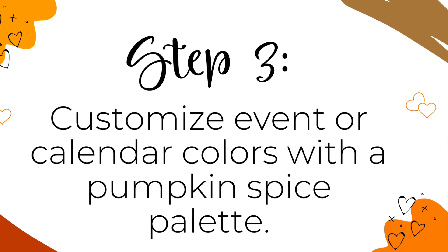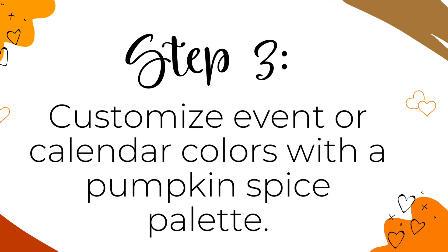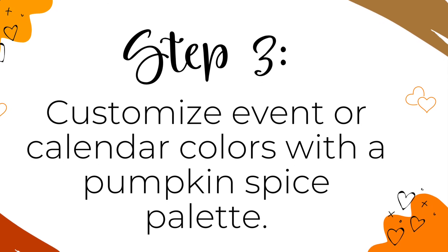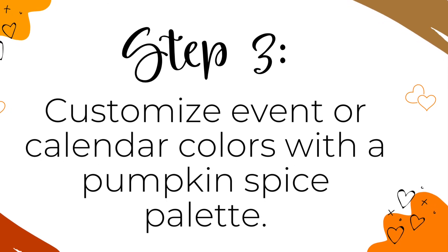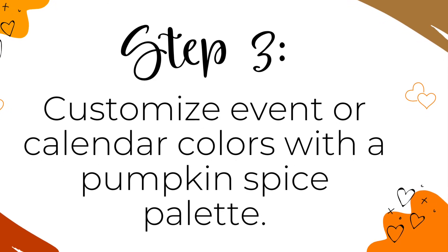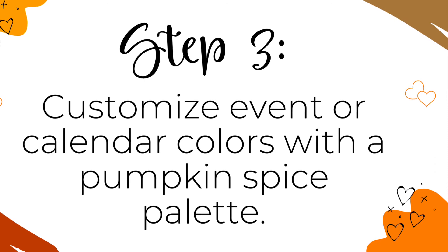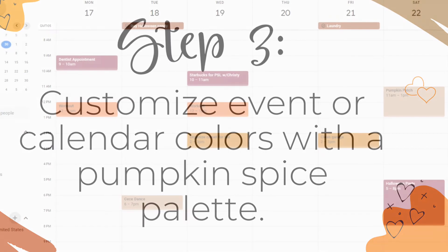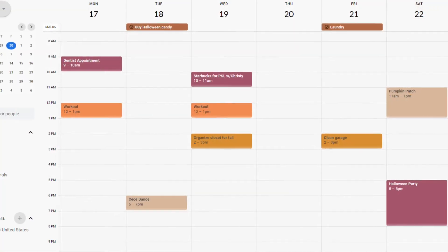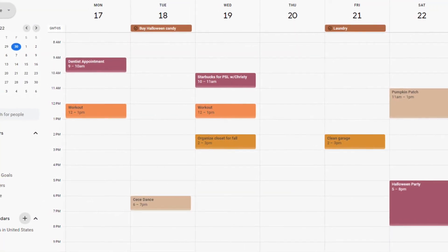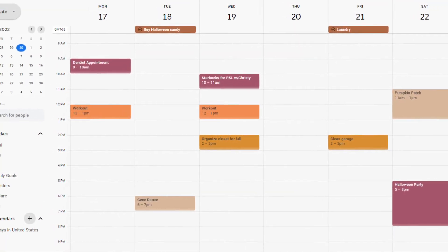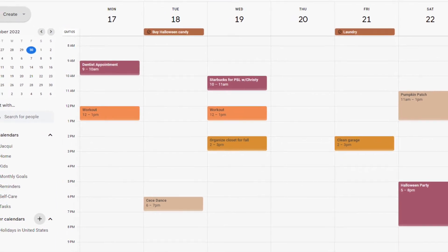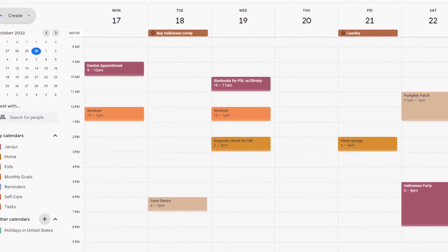Step three: customize your event colors with a pumpkin spice palette. Now that you have a festive pumpkin spice background on your Google Calendar, let's add a pumpkin spice color palette to make your events, tasks, and reminders beautifully color coordinated.